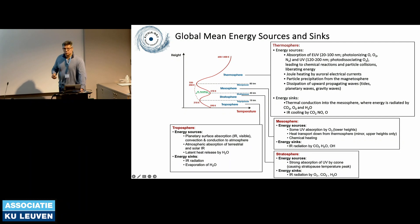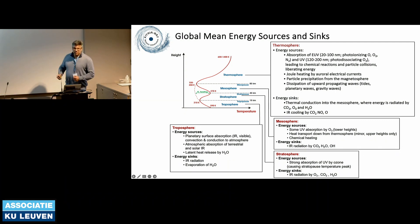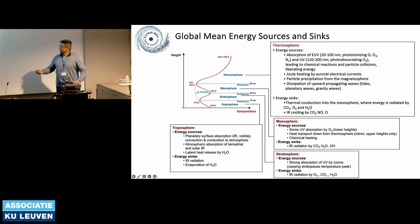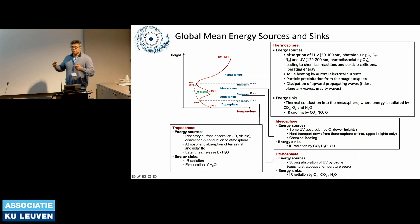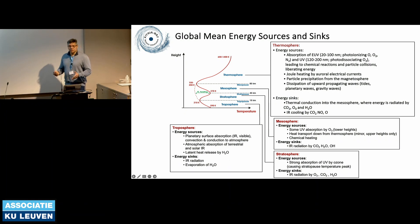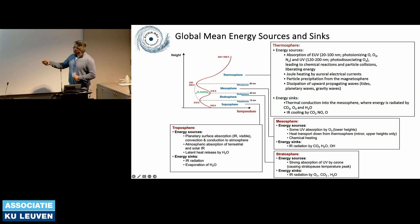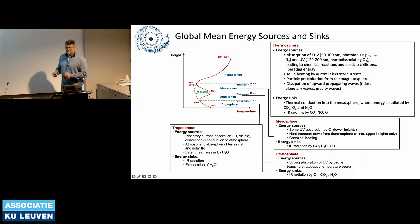One source coming from below, from the stratosphere and mesosphere, are upward propagating waves. Through these heating sources at lower altitudes, waves are produced that propagate upward and break mostly at the turbopause and mesopause, redistributing heat at the bottom of the thermosphere. It's a few percent relative to EUV heating, but there is some heating coming from below. The sinks are conduction into the mesosphere and infrared cooling — carbon dioxide and nitric oxide cooling — where excited states re-radiate out into space.